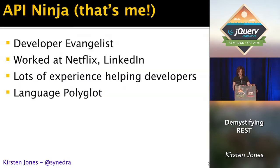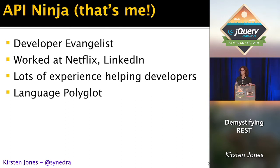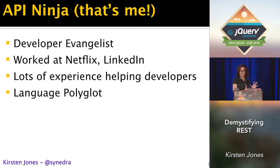First, I'll give you an introduction of who I am. My business card actually does say API ninja on it — that is my official job title. What does that mean? That means I work at 3Scale, which is an API management company. We have a lot of customers who are trying to make APIs for people, so one of the things I do is go around and teach people how to make APIs that don't make developers cry.